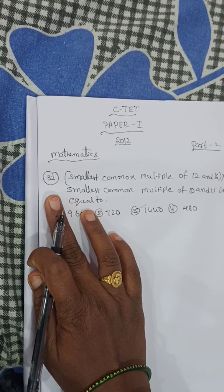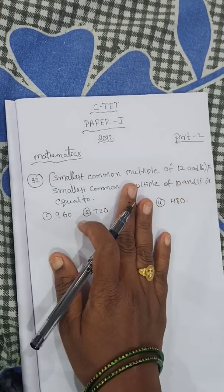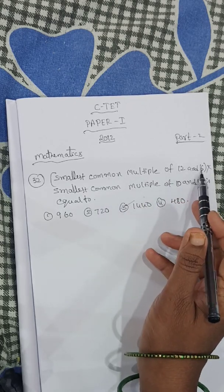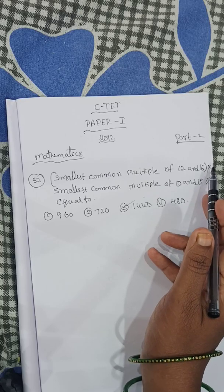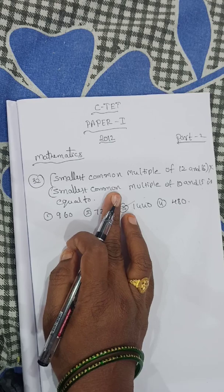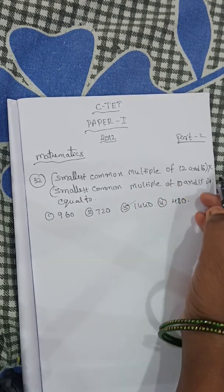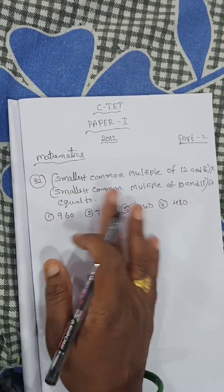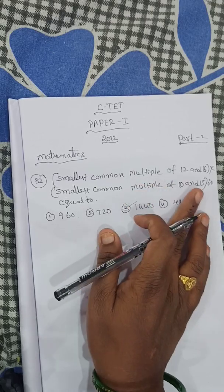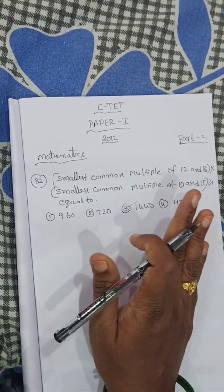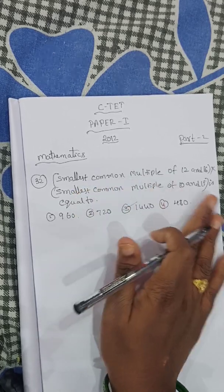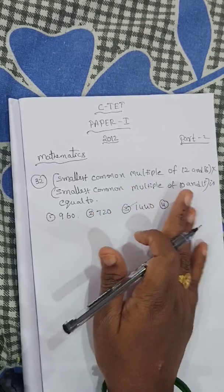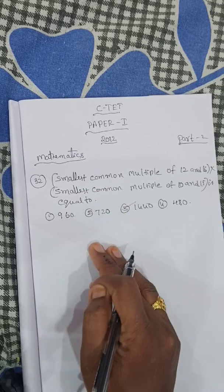Next sum, number 32. The sum is: smallest common multiple of 12 and 16, multiplied by smallest common multiple of 10 and 15. Okay, first — smallest common multiple means LCM. You know that least common multiple and greatest common factor — that's HCF and LCM. So smallest means LCM.